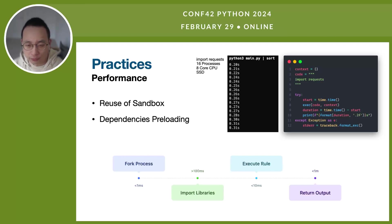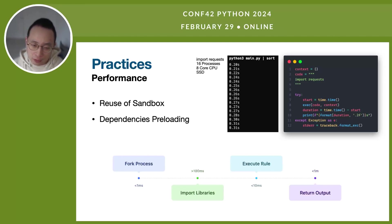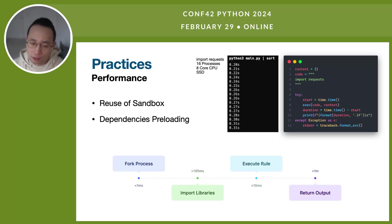To tackle this performance issue, we established a Python interpreter pool for interpreter reuse. We also preloaded common libraries upon interpreter startup, so the Python interpreter will not try to re-import libraries already existing in memory when executing further rules. This eliminates disk I/O, significantly speeding up request handling and reducing library import time to almost zero, effectively optimizing system performance and response time.